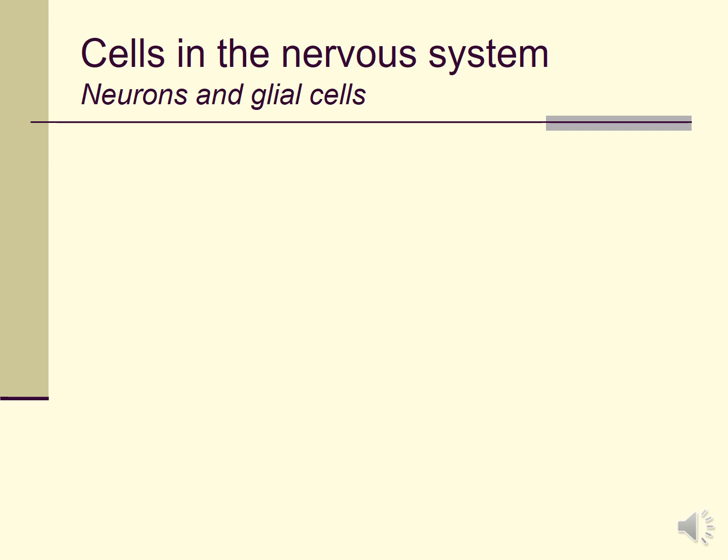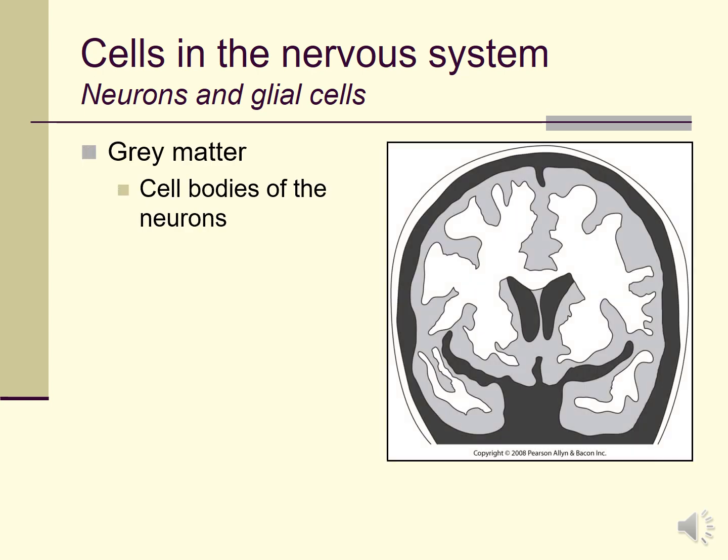If we pull out to a more macroscopic level and look at a sectioned brain, we'd notice gray areas and white areas. The gray matter reflects areas where there are concentrations of the cell bodies of neurons, while the white matter reflects areas which are mostly insulated or myelinated axons. So there are bands where most of the cell bodies are, and broad tracts where it's mostly axonal projections passing information through the central nervous system.